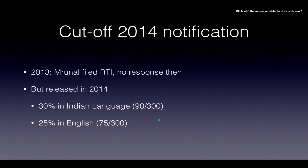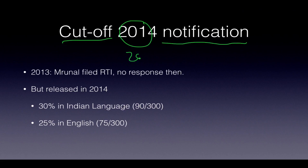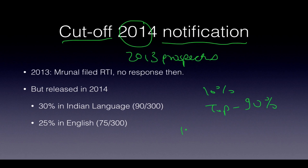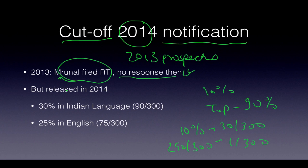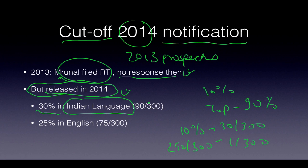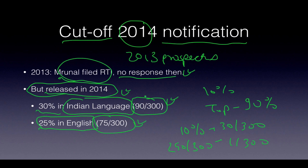When I gave the exam in 2013, there was no cutoff notification. There are 2 types of selection: if 10% fail, the top 90% automatically qualify. I filed an RTI and there was no response at first, but the cutoff was released in 2014. According to the official UPSC notification of 2015: 30% in Indian language is the cutoff — that is 90 out of 300 marks — and 25% in English — that is 75 out of 300. If you get those marks in Hindi, Tamil, or Telugu, you pass.